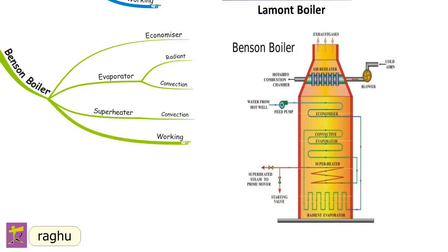In the working of the Benson boiler, complete heating, steam generation, and superheating are done in a single tube. Feed water flows through the economizer tubes and then through the radiant parallel tube section to evaporate partly. The remaining water in the radiant evaporator is evaporated into steam in the convection evaporator by hot gases. The saturated steam from the evaporator passes through the convection superheater where it is superheated, and finally the superheated steam is supplied to the steam turbine. The capacity of the Benson boiler is about 750 tons per hour.